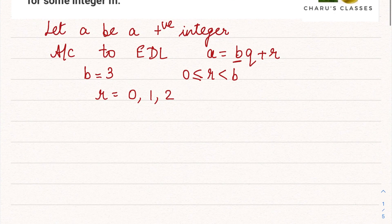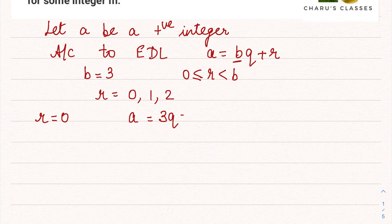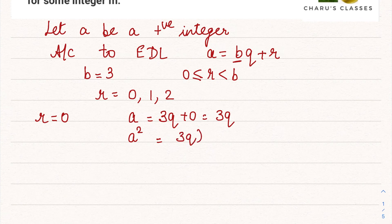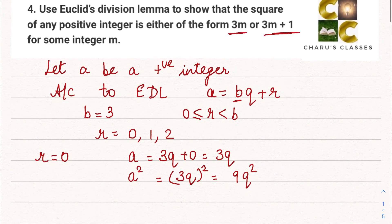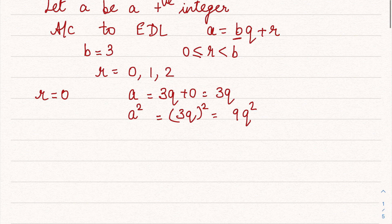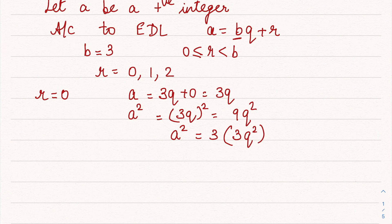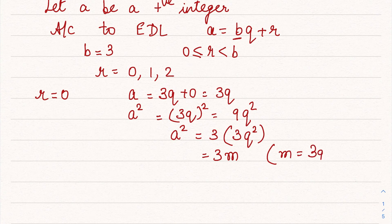Case 1: when r = 0. Then a = 3q + 0 = 3q, so a² = (3q)² = 9q². To prove this is of the form 3m, we take 3 common: a² = 3(3q²). So we have proved the square of the positive integer a can be written as 3m, where m = 3q².